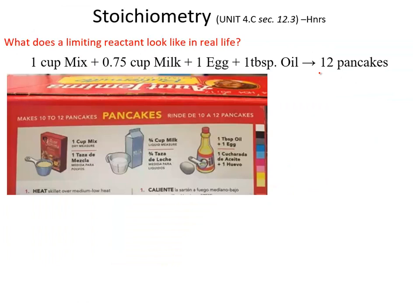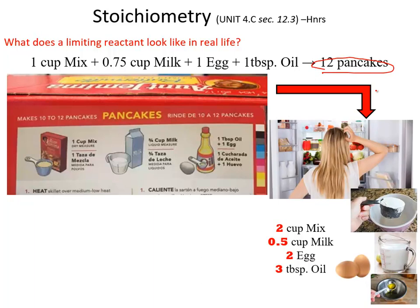So how does this look in the real world? If you look at a recipe for pancakes — the same kind of idea from the Stoichiometry Part 1 video — Aunt Jemima pancakes require one cup of mix, three-quarter cups of milk, an egg, and a tablespoon of oil, making roughly about 12 pancakes. But what if you go in your fridge or pantry and you find two cups of mix, half a cup of milk, two eggs, and three tablespoons of oil? You have all the ingredients, but in different amounts than what the recipe asks for.